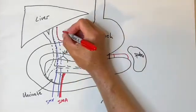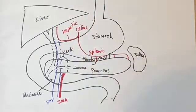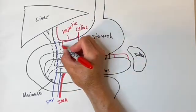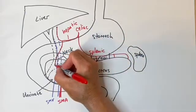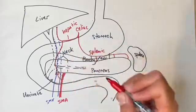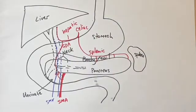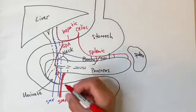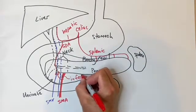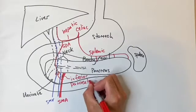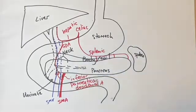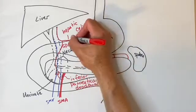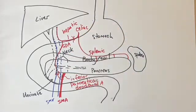The celiac axis gives rise to the splenic artery, which supplies blood to the body and tail of the pancreas. The proper hepatic artery gives rise to the gastroduodenal artery (GDA), which supplies blood to the head of the pancreas. There is also a collateral from the inferior pancreaticoduodenal artery off the SMA, which also supplies the head and collateralizes with the GDA — this can be a source of blood flow to the liver if the proper hepatic artery was ligated near the celiac axis, as can occur in trauma.